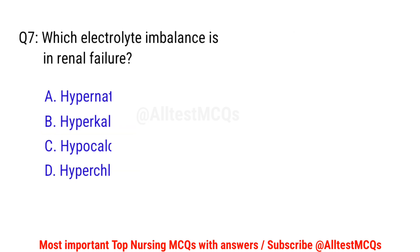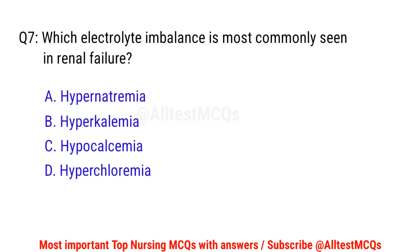Question number 7. Which electrolyte imbalance is most commonly seen in renal failure? The right option is B: Hyperkalemia.